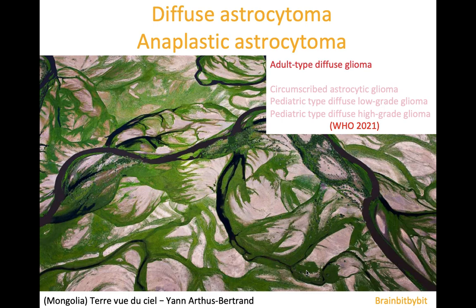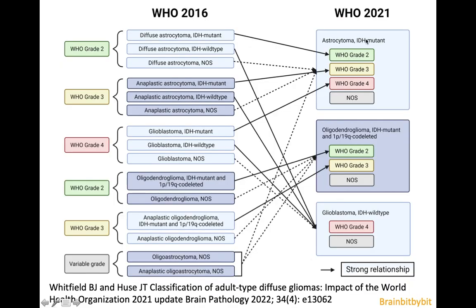I'm going to show images of diffuse and anaplastic astrocytoma that have been renamed astrocytoma IDH mutant, respectively grade 2 and grade 3, as you can see in this rather impressive overview of the changes from the 2016 to 2021 classification.